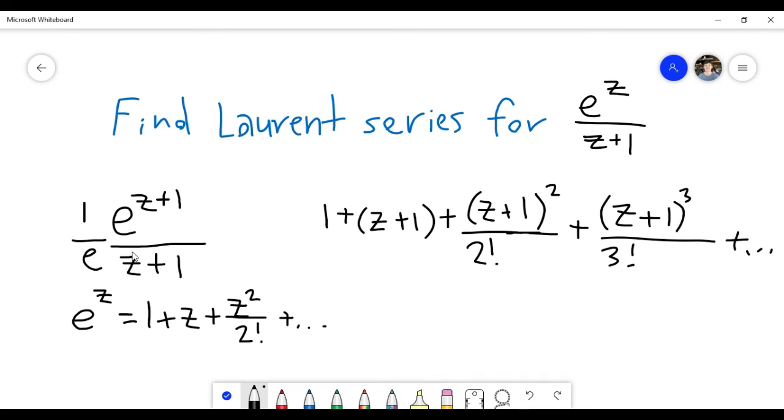But then notice that I'm dividing by z plus 1. So if I want my series here to be complete, I also have to divide all of these by z plus 1. So I have to divide this by z plus 1, z plus 1, divide this by z plus 1, and so on.